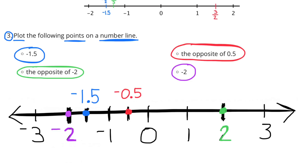The opposite of negative 2: the opposite of negative 2 is positive 2. So 2 units to the right of 0 on the number line, I've plotted the opposite of negative 2, which is positive 2.